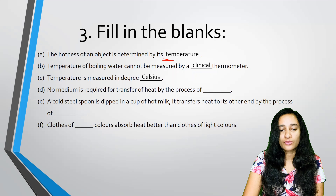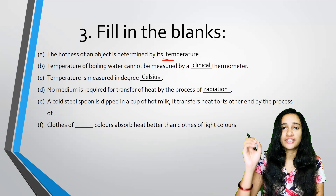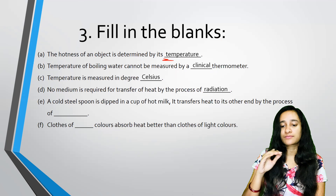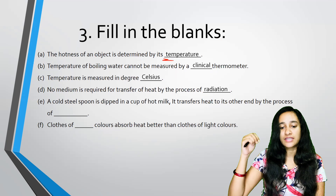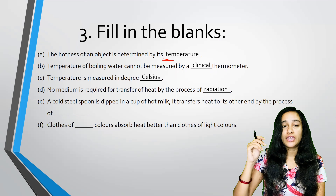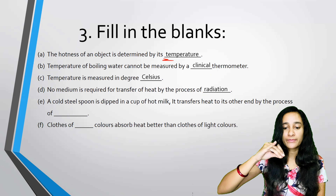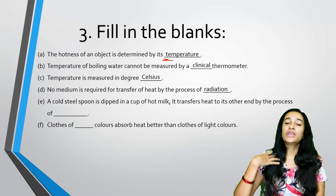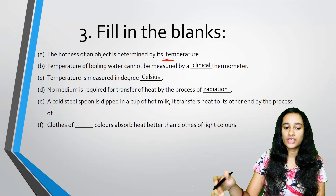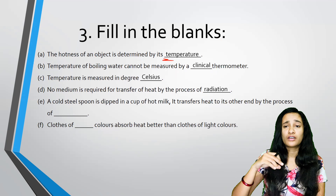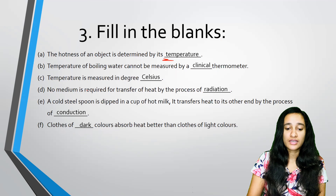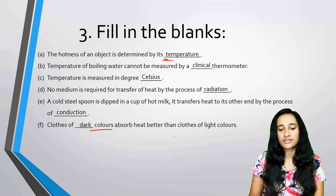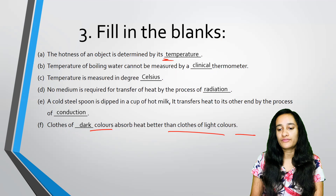No medium is required for transfer of heat by the process of radiation. A cold steel spoon is dipped in a cup of hot milk — heat will transfer by conduction. Clothes of dark colors absorb heat better than clothes of light colors.